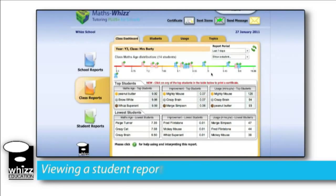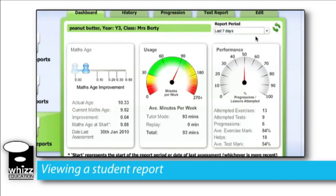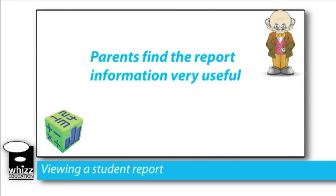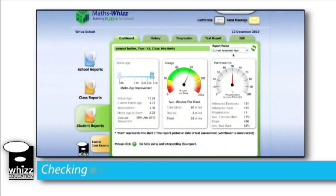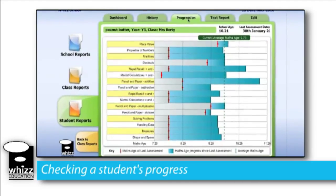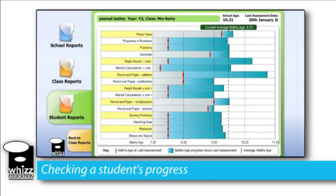Finally, let's look at a student report. By finding our student on the MathsAge number line and clicking on them, we can view their report. Within this student report we're going to gain a breakdown of this student's specific progress, usage and maths ability. Feedback from schools suggests that this information is most useful when communicating maths ability and progress with parents. By clicking on the Progression tab, we can break down a student's unique ability in all the different topic areas of the maths curriculum according to this student's maths age.